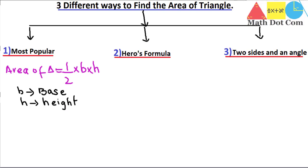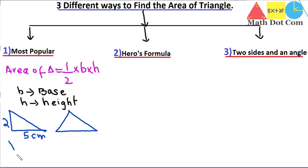For example, if you are given a triangle with a base value of 5 centimeters and a height of 2 centimeters, you can easily find the area. This method also works for triangles of different shapes — you just need the height and the base. The height can be drawn as a perpendicular from the apex, and the base is the bottom side of the triangle.